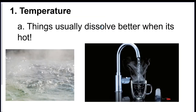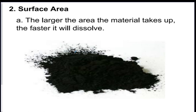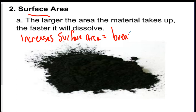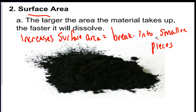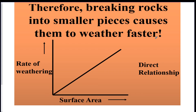The first thing to make things dissolve faster is temperature. If you put sugar in tea, it's going to dissolve faster in hot tea rather than cold tea — things dissolve better when it's hot. The second thing that makes it dissolve faster is breaking it into little pieces — that's called increasing surface area. Crushed ice versus cubed ice: cubed ice stays in your drink a lot longer than crushed ice because smaller pieces dissolve faster. Breaking rocks into smaller pieces causes them to weather faster.